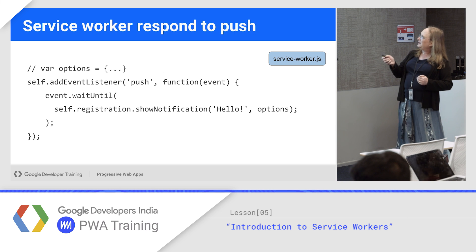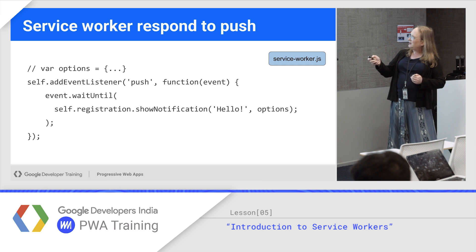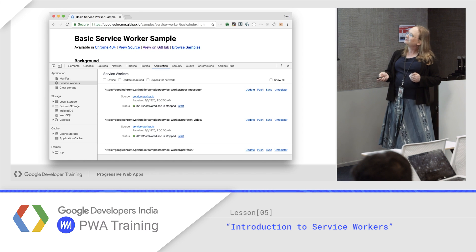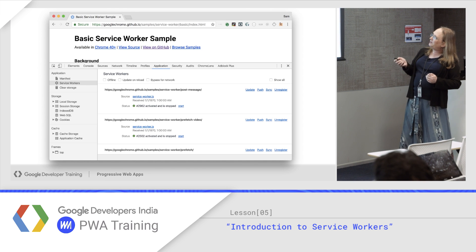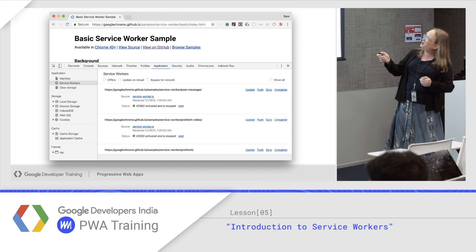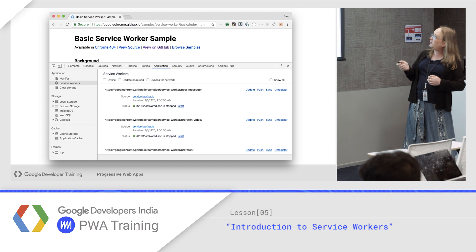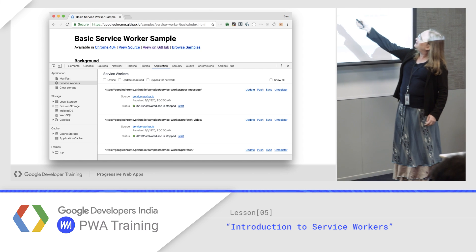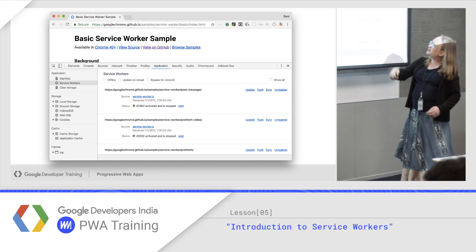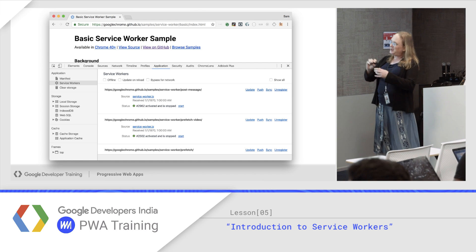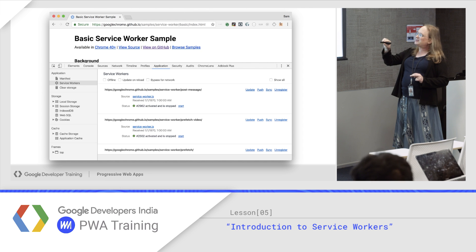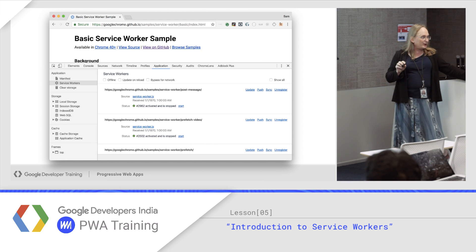For push: you get a push event, call showNotification which puts a notice on the screen, and use waitUntil until that's complete. There are basic service worker samples at googlechrome.github.io. In the Application tab in Chrome, under Service Workers, you'll see all the service workers that are running — and you may be surprised at how many things are already using Service Worker.